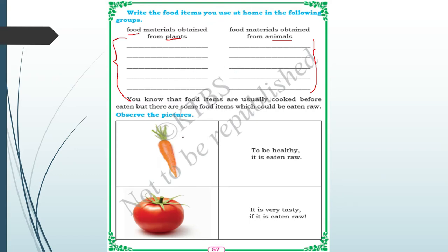Here you can observe a vegetable. Which vegetable is it? It is a carrot. Then the second one is very tasty if eaten raw. What is it? It is a tomato.